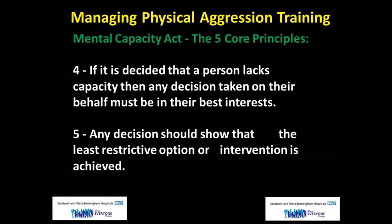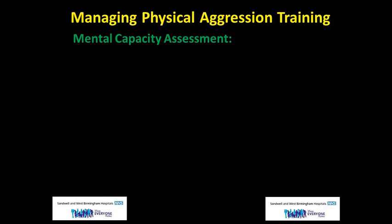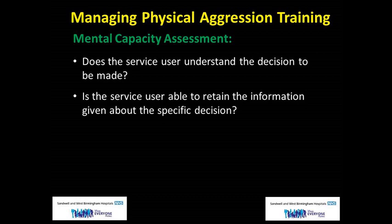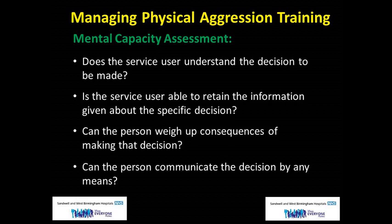In order to establish capacity, we will conduct a capacity test. A health or social care professional assessing someone's capacity must use a two-stage test. The first question asks whether the person has an impairment or disturbance of the mind or brain — these could include dementia, delirium, intoxication through drugs or alcohol, hypoxia or severe emotional distress. If the person does have an impairment or disturbance, the second question identifies how much it affects the person's ability to make a specific decision. There are four questions: does the service user understand the decision to be made? Are they able to retain the information given? Can they weigh up the consequence of making that decision? Can they communicate the decision by any means?